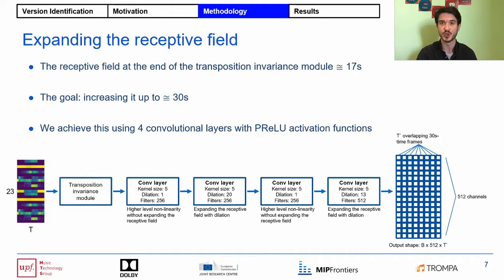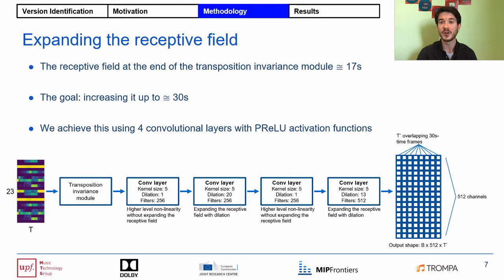After the transposition invariance module, each output has information about nearly 17 seconds of audio, and we want to extend this duration. We do this by using four convolutional layers with parametric ReLU activation functions. Two of these convolutional layers have rather small kernel sizes to achieve higher-level nonlinearities in a short temporal context. The other two, still having small kernel sizes, have dilations of 20 and 13 to expand receptive fields. After these convolutional layers, for each song, our representation has 512 channels and T' overlapping 30-second time frames.